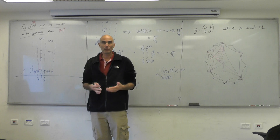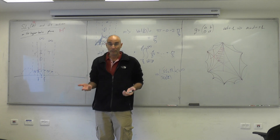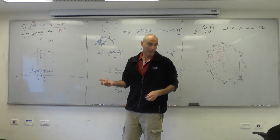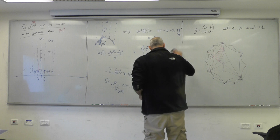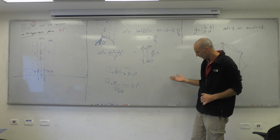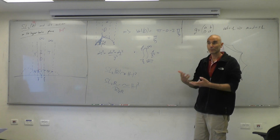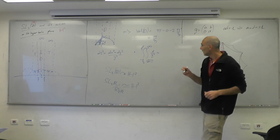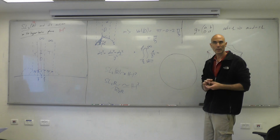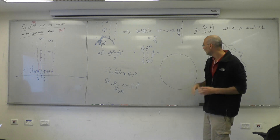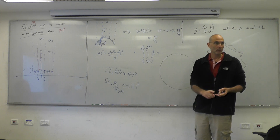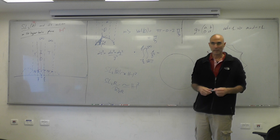We get a tessellation of the hyperbolic plane by ideal triangles — infinite ones, each having a vertex at infinity. One can also ask: can we have a tessellation of the hyperbolic plane more similar to familiar square tessellations of the Euclidean plane?